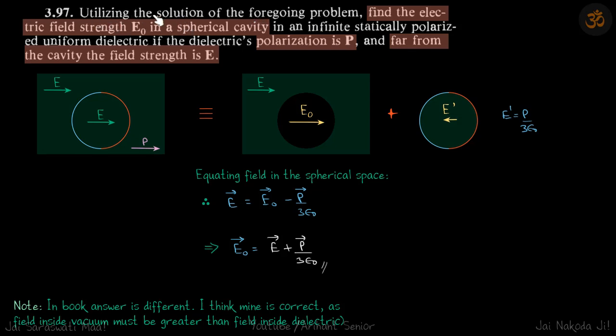Using the solution of problem 3.96, we need to find the electric field E0 in a spherical cavity in a dielectric. If polarization is P and far from the cavity, the field strength is E.